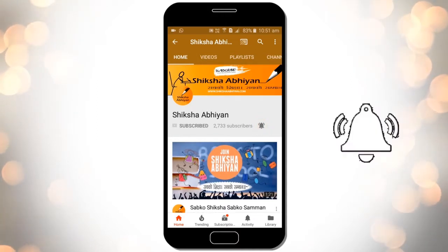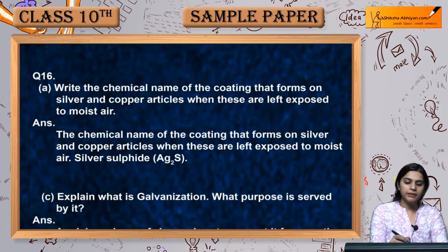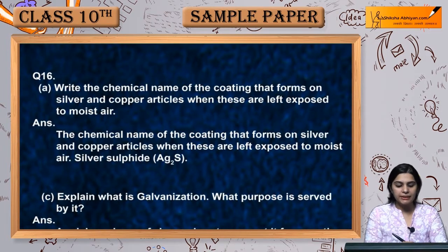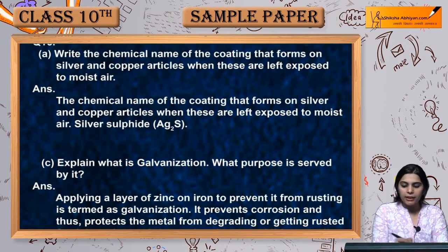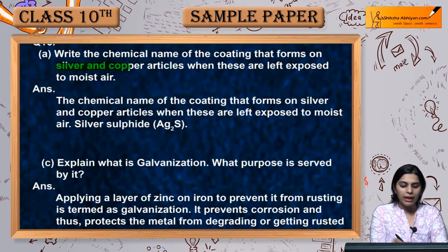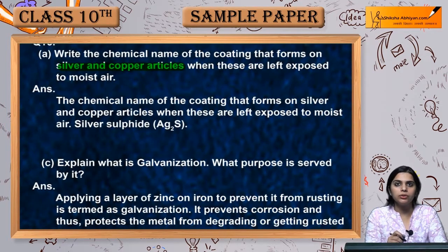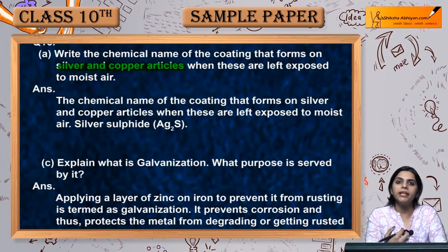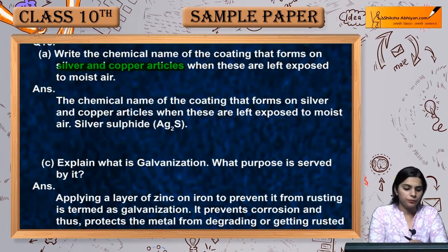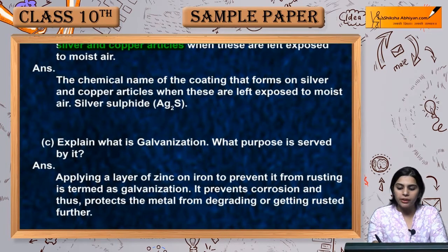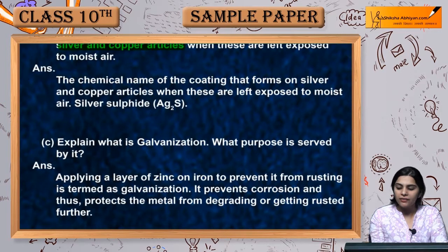Hello students, our next question is question number 16: write the chemical name of the coating that forms on silver and copper articles when these are left exposed to moist air. The chemical name of the coating that forms on silver and copper articles when left exposed to moist air is silver sulfite, that is Ag₂S.